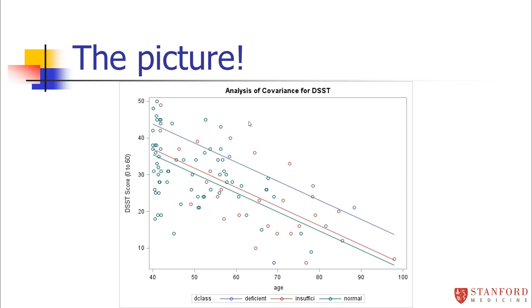Interestingly, as I mentioned though, once you account for age, the deficient group, that's this blue line, actually seems to, across all different ages, have a little bit higher of a cognitive score. It might be a quirk of my made up data.